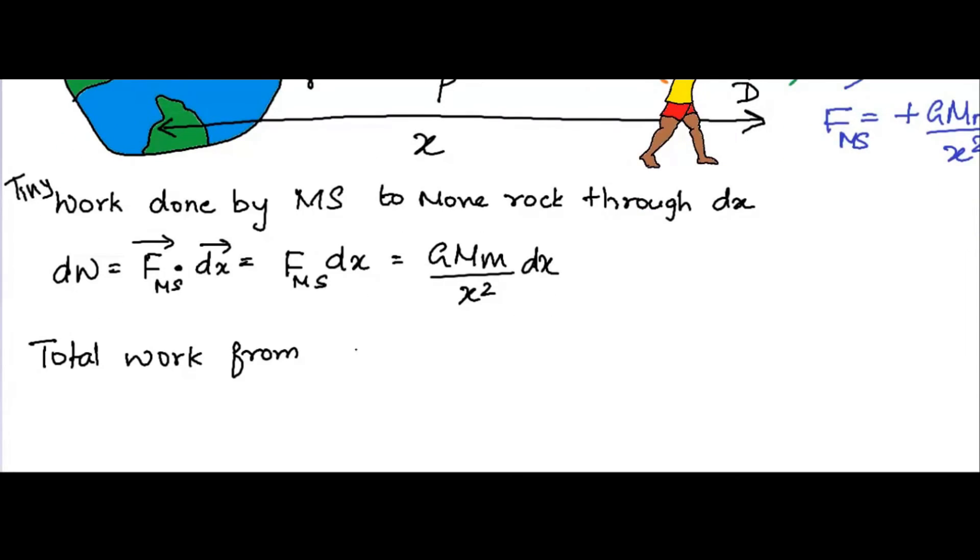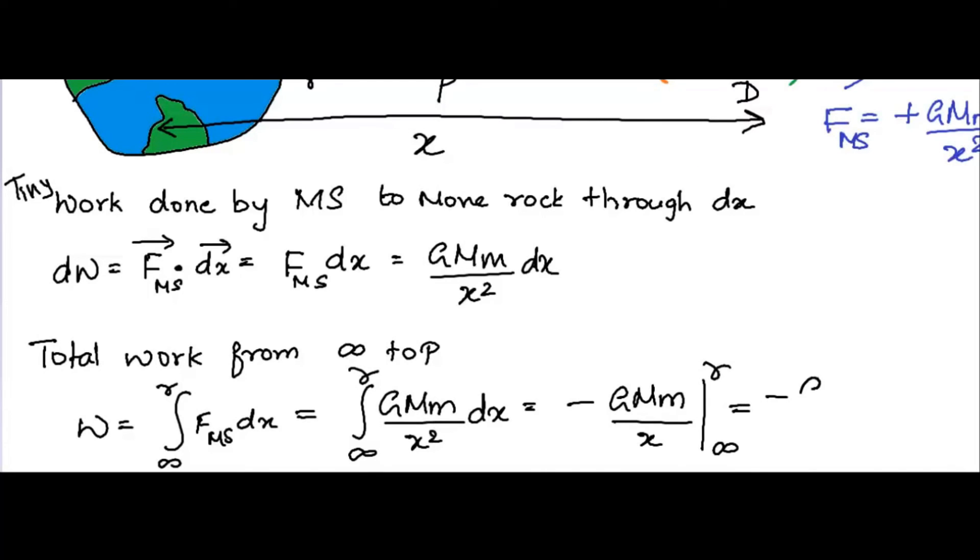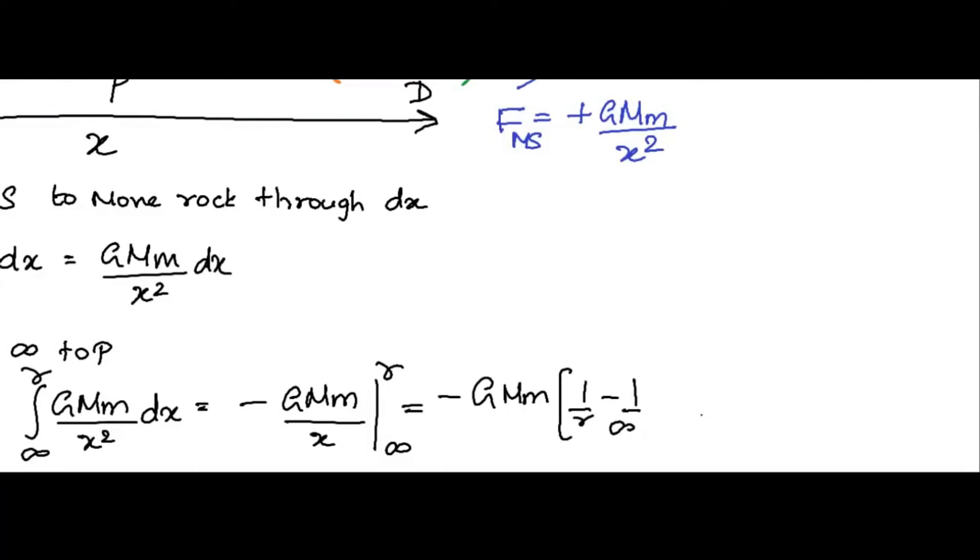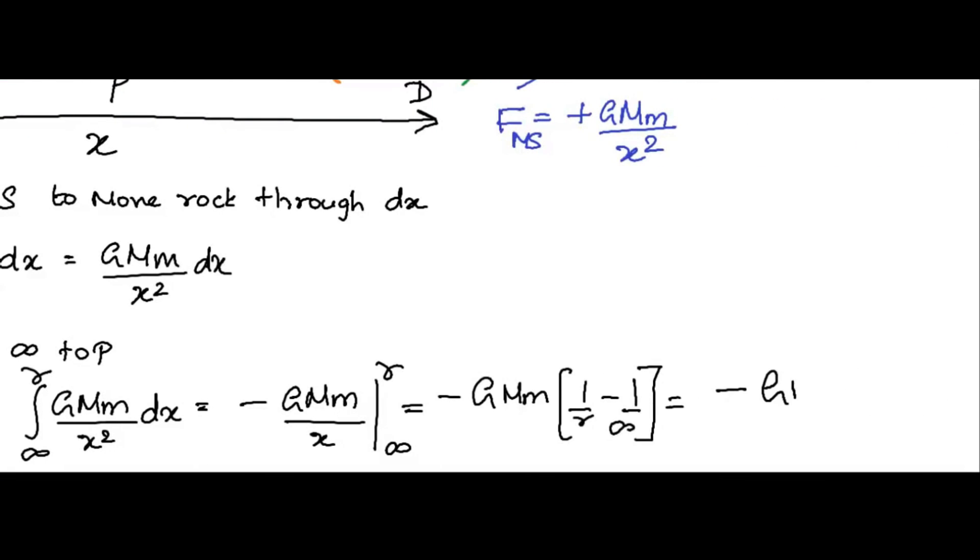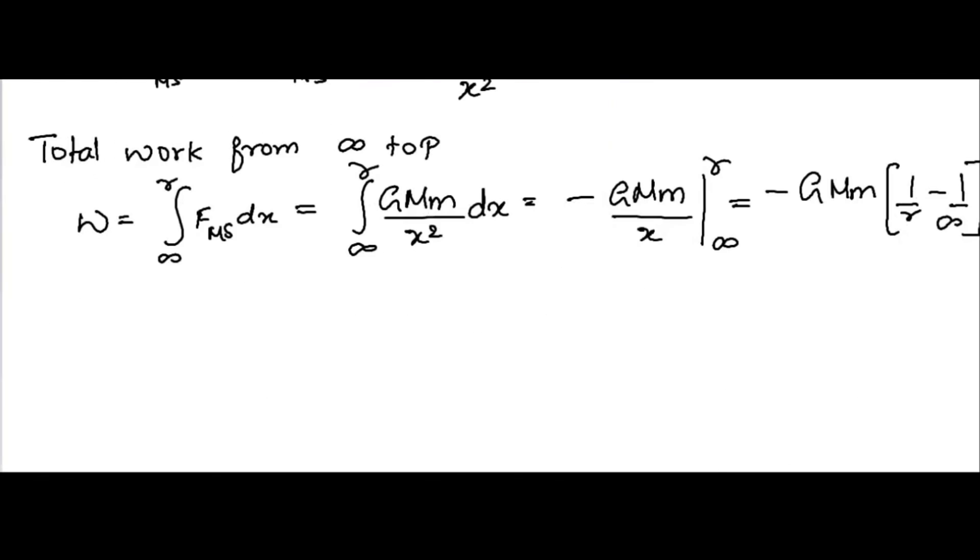Now the total work by me would be the integral in going from far away to point P. And this integral is easy peasy, yielding minus GMm over r.